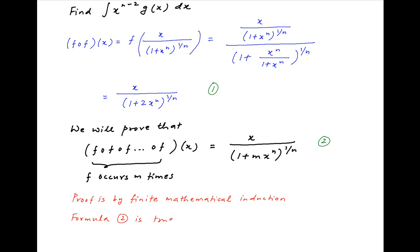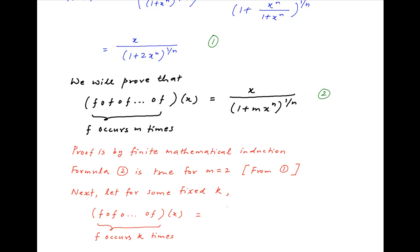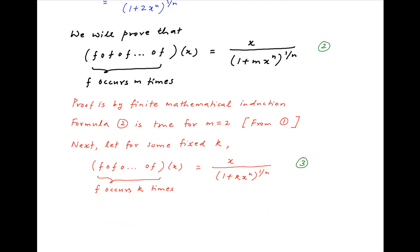We have already established that formula 2 is true when m is equal to 2. Next, let's assume that the result is true for some number k as well. In other words, function of a function and so on k times of x is equal to x upon 1 plus k times x raised to the power n, whole raised to the power 1 upon n. Let's call this Result 3.